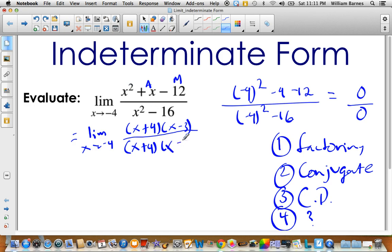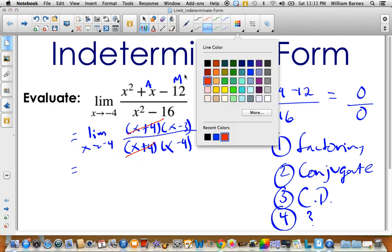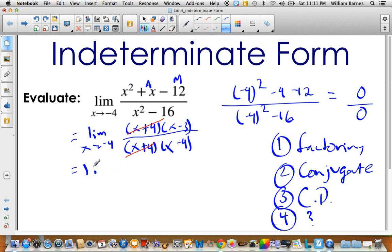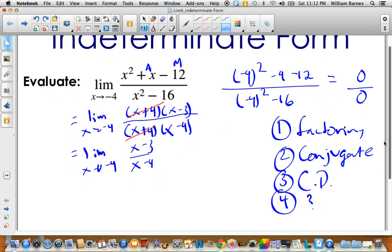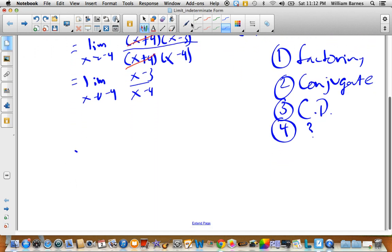So what you want to happen, and if you do a couple steps and this doesn't happen for you with an indeterminate form, if something doesn't factor or doesn't cancel, then you're doing something wrong. So in our case here, the x plus 4 and the x plus 4 cancel. So I'm left with the limit as x approaches negative 4 of x minus 3 over x minus 4.